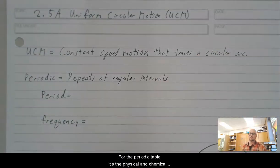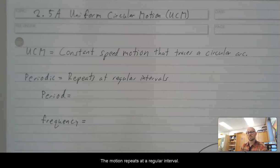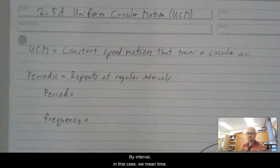And the word periodic in that case and in this case means that something repeats at regular intervals. For the periodic table, it's the physical and chemical properties of the elements that stem from the valence electrons or number of energy levels. And for us, it's literal motion. The motion repeats at a regular interval. By interval, in this case, we mean time.